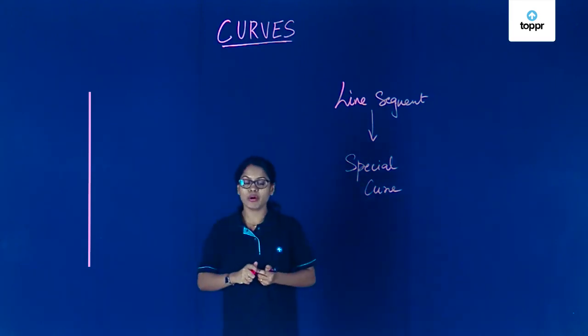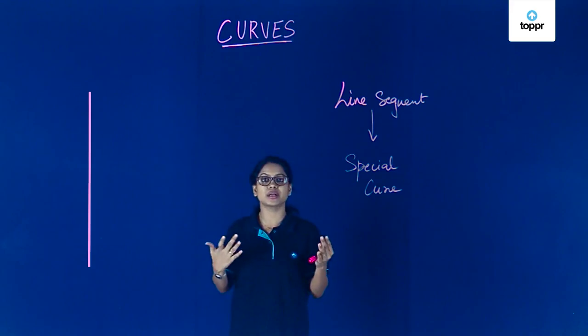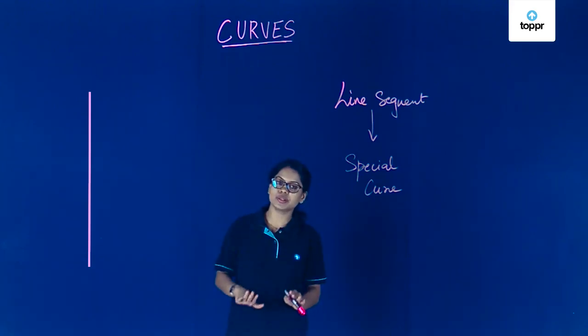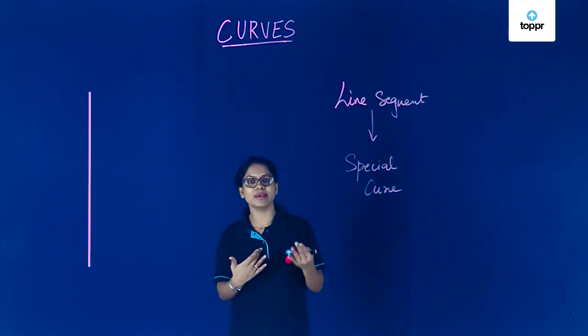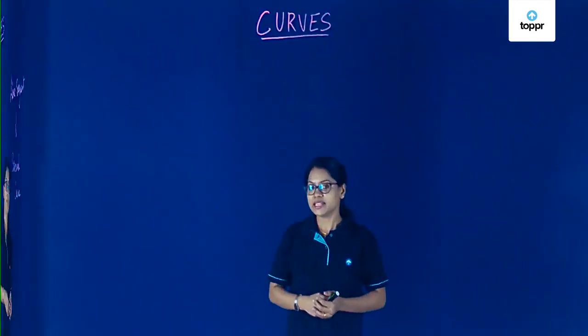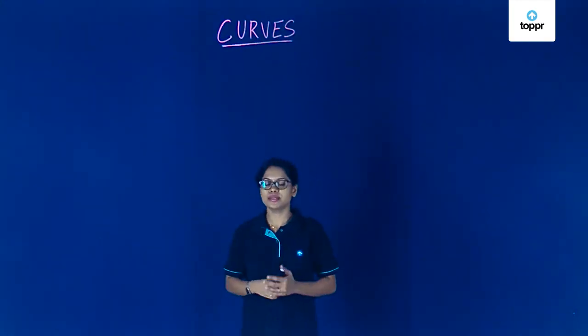So in general, all things that are not straight are curves, but in maths we consider those as well as the straight lines also as curves. Let's look at a few more curves to understand what kind of curves are there.